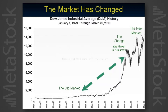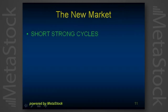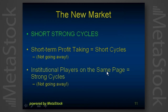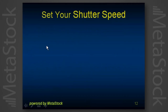This change has been with us now for 15 years but hardly anyone talks about it. This is a straight-line graph — there are no tricks with log scales or anything like that. The new market just is not like the old market. The new market has short, strong cycles, and it's caused by short-term profit-taking. The institutional large-volume players are taking their profits as soon as they see them, and it's not going away because the institutional players all have basically the same computers and the same playbook. So the cycles are not only short, they're strong.